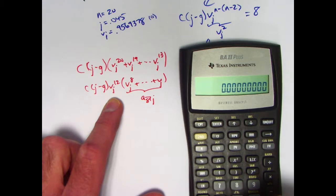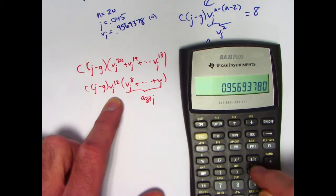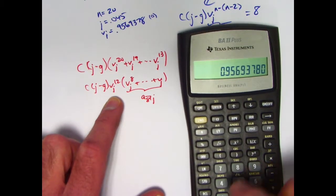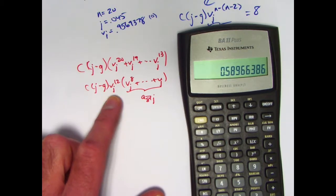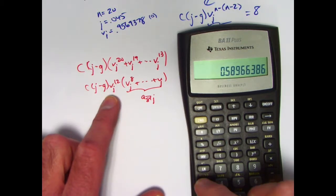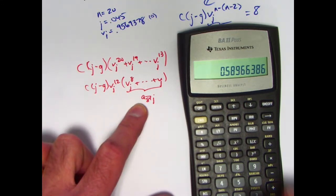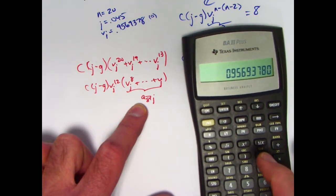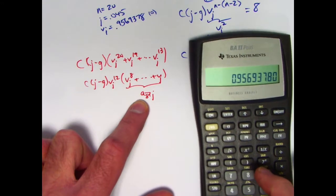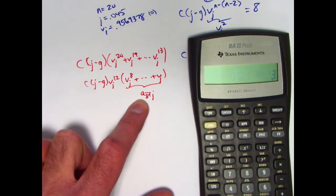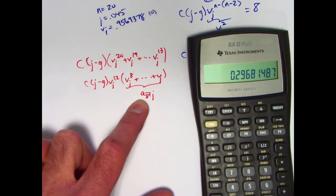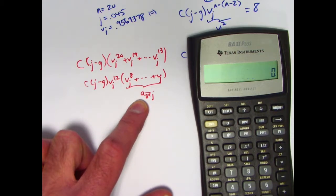v, again, is in register 0 to the 12th power 0.58966386. I'll store that in register 2. Now let's figure out a_8. v, again, is in register 0, raise it to the 8th power, subtract from 1, divide by j, 0.045. a_8 looks to be 6.59588607.